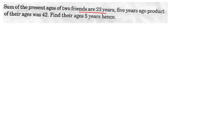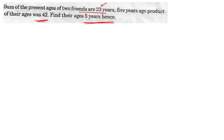Problem 2: The sum of the present ages of two friends is 23 years. Five years ago, the product of their ages was 42. We are asked to find their ages five years hence. The given information is: sum of present ages is 23, and five years ago the product of their ages was 42.